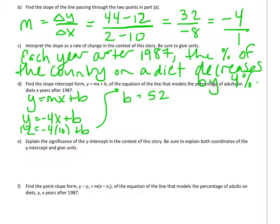So I'm not quite done. I have to write down the final equation of the line where now I replace the m with a negative 4 and the b with a 52. So I have y equals negative 4x plus 52.